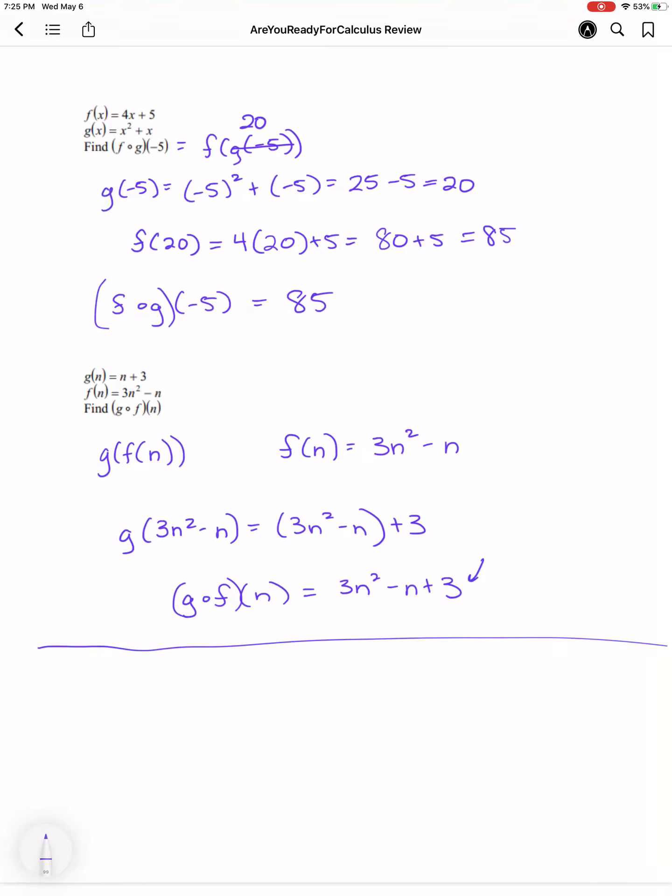For fun, let's just find f of g of n. Well, g of n equals n plus 3. So I'm finding f of n plus 3. I'm going to input that into my function. That'll be 3 times n plus 3 squared minus n plus 3, which is 3 times n squared plus 6n plus 9. I'm using binomial expansion for that to do that quickly.